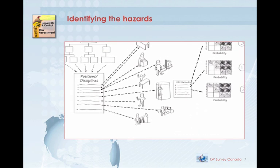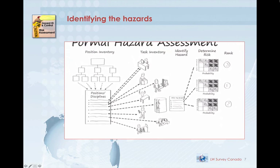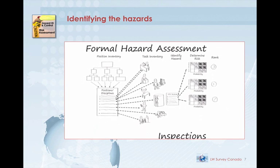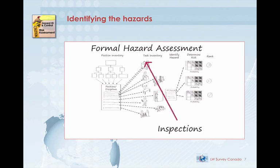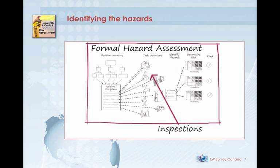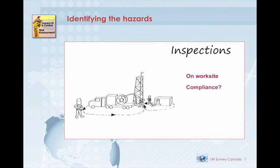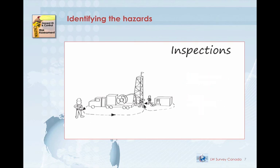This formal system is distinct from two other items you will be reviewing for Element B: inspections and site-specific hazard identification. Inspections are not hazard assessments, but they are an important part of a company's overall system of hazard assessment and control. Inspections provide a way to check if hazard assessment and hazard control measures are actually working. An inspection involves being on the worksite, looking for compliance with the company's policies, ensuring controls are in place, observing actual worker behavior, and picking up on new or unanticipated hazards. If done right, inspections drive continuous improvement into the company's formal hazard assessment and control systems.